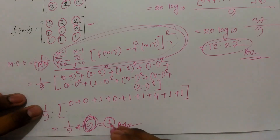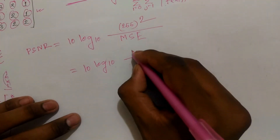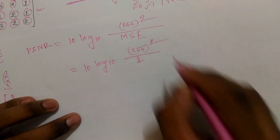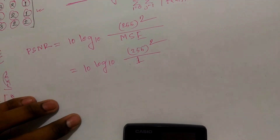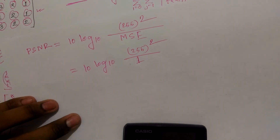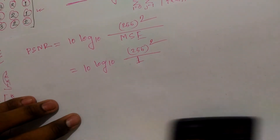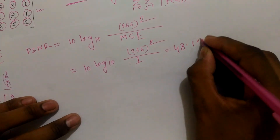Let's try this. The value of 1 and the value of 255 into 255, and then log and the value of 10 is equal to 48.13.